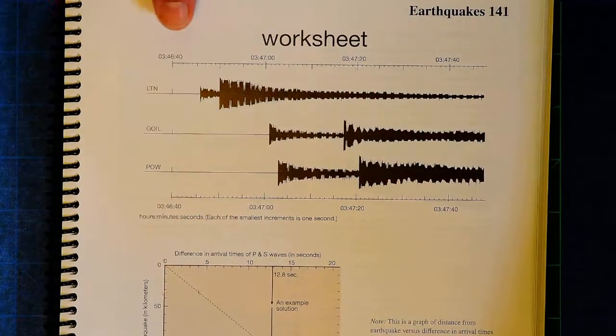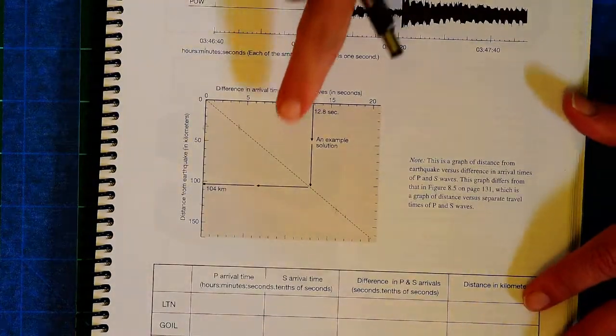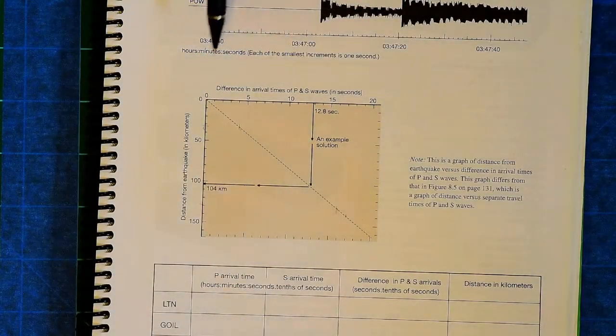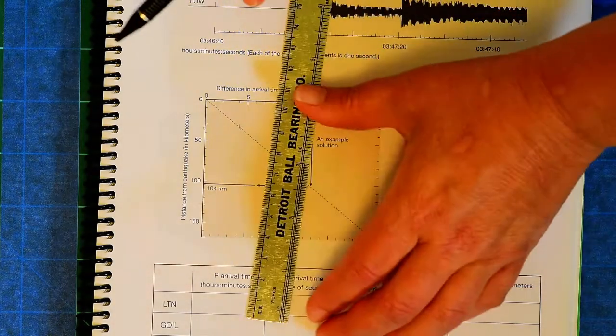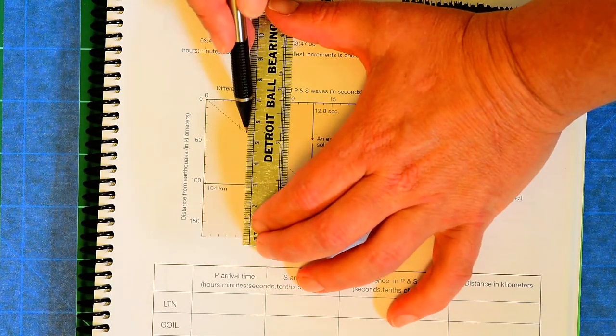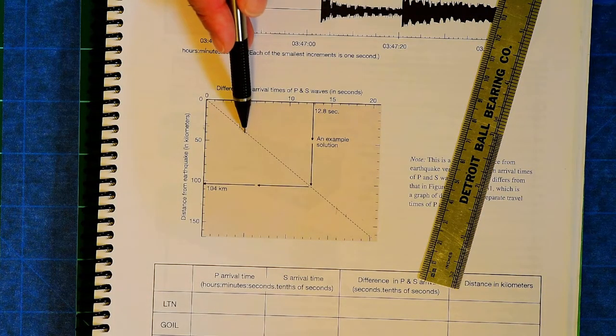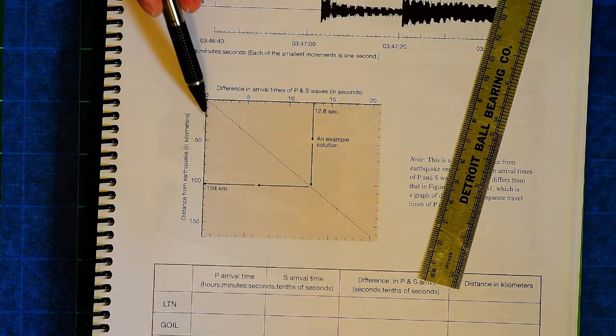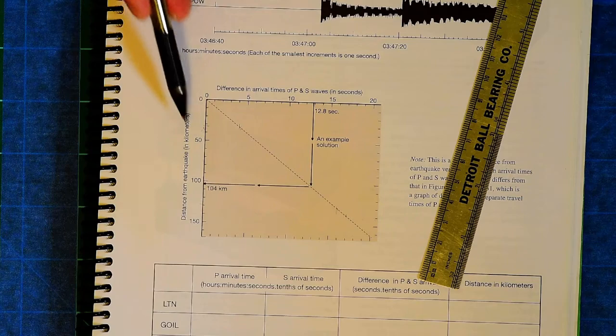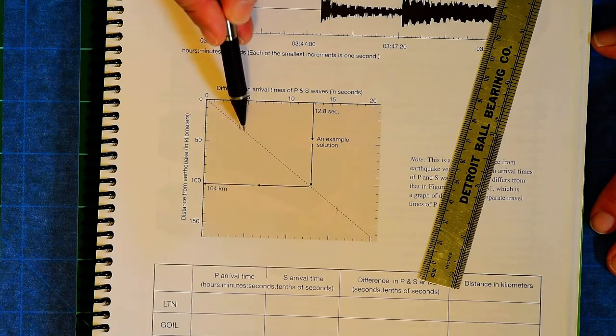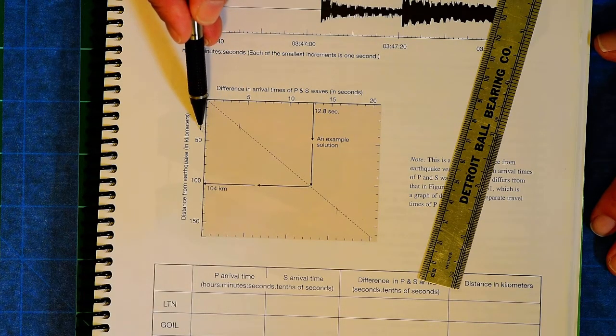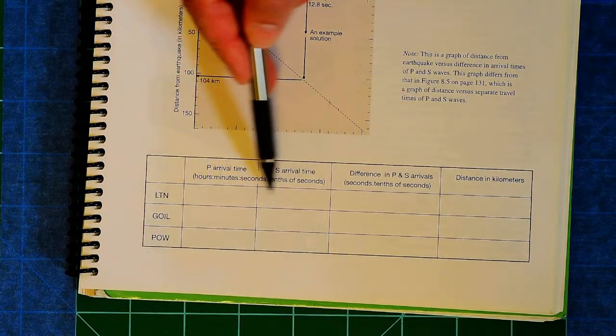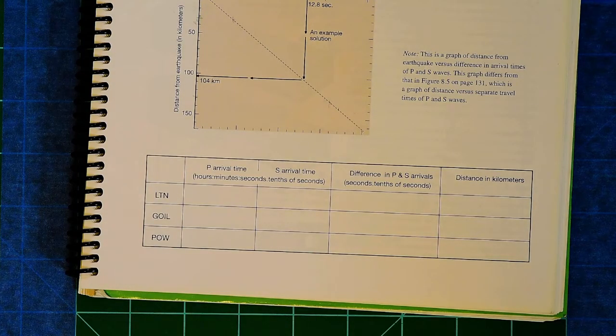And this distance in kilometers, we can get off this chart right here. So on the x-axis, we have the difference in arrival times of the P and the S waves. And right there is 5 seconds. We said it was 5 seconds. So there's 5 seconds. I go straight down from 5 seconds to this dashed line, and then I come straight across. And that gives me the distance from the earthquake in kilometers. Each one of these marks is 10. So if I came down here and straight across, it looks like I'm sitting right at 40 kilometers. So that's what you're going to do with those problems. We just figured out the one for LTN, and we know that's 40 kilometers away from the epicenter of the earthquake.